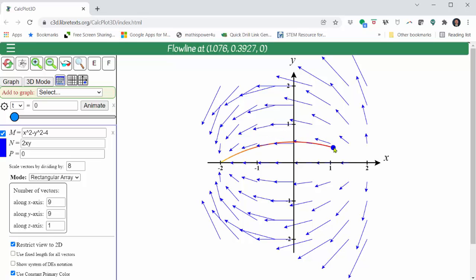Again, if we click on a point, we can see the flow line from that point.